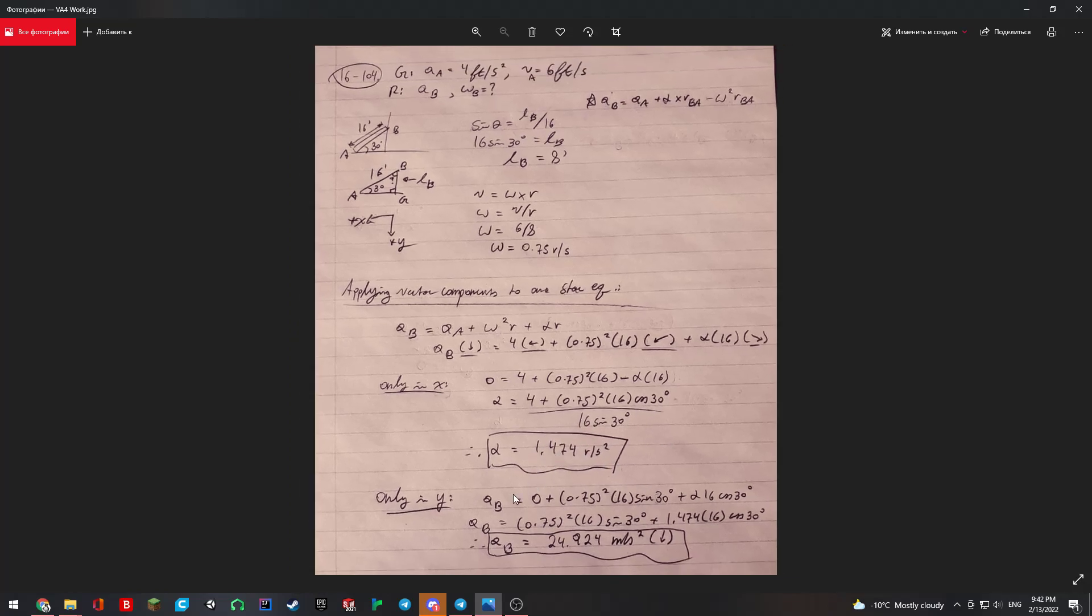Then we do the same thing except in the Y direction. There is another component, AA, that doesn't have a Y component. As we labeled it being 4 going left, which is positive X, we say that's zero. That leaves us with only one thing to solve, being AB. Just doing a few simplifications, we can get that AB equals 24.924 meters per second squared going down.